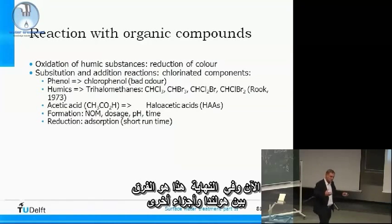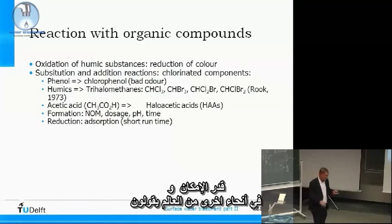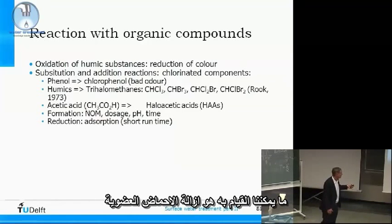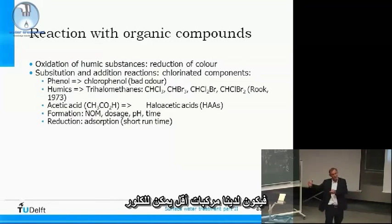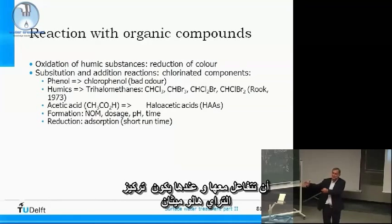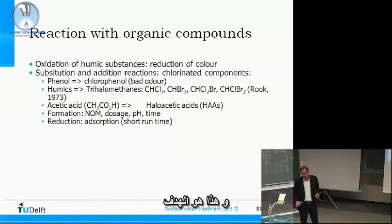This is the difference between the Netherlands and other parts of the world. In the Netherlands, we avoid chlorination as much as possible. In other parts of the world, the approach is to remove the humic acids and organic material before chlorination, so there are fewer compounds for chlorine to react with, and the concentrations of trihalomethanes and haloacetic acids are reduced. Another approach is to dose as little chlorine as possible.